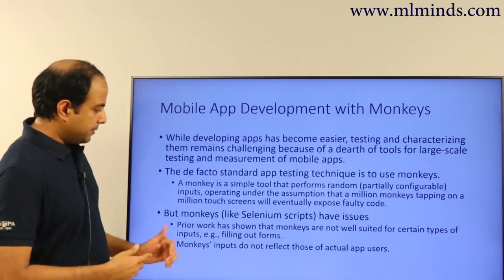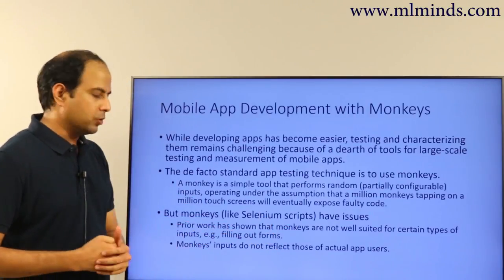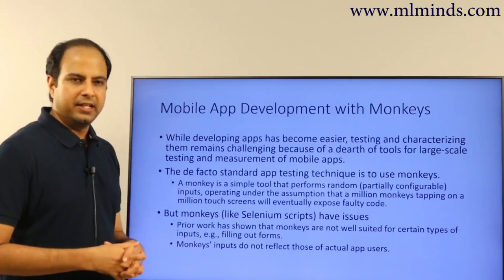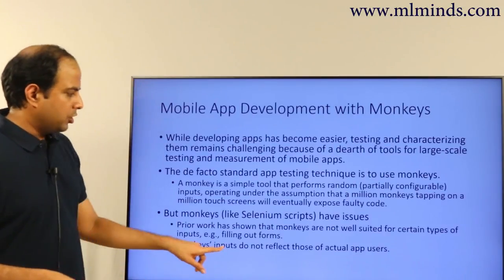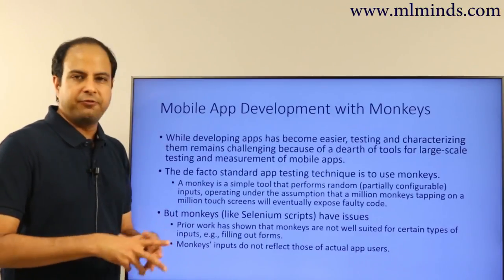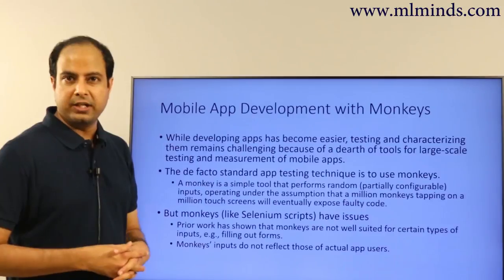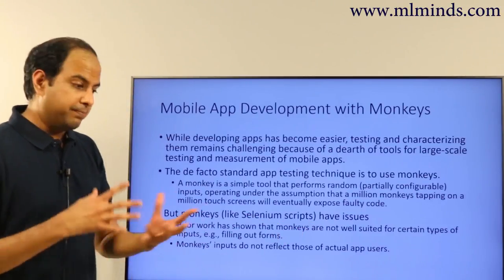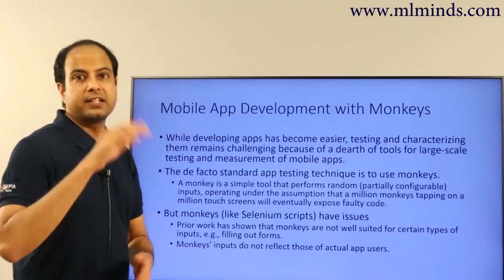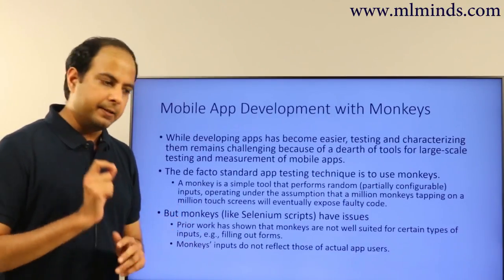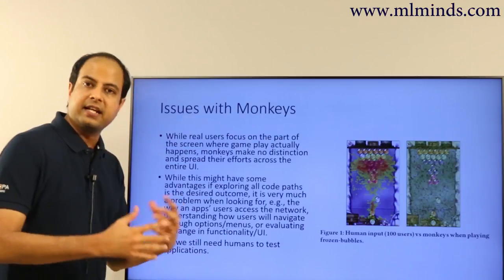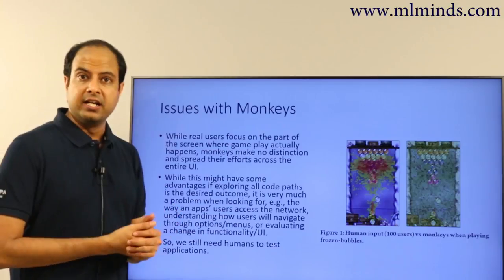Monkeys, like Selenium scripts, have issues. Prior work has shown that monkeys are not well-suited for certain types of inputs, for example filling out forms, which usually require logical input that normal users would fill in. Also, monkeys' inputs don't reflect those of actual app users. If you're trying to test performance, actual users may not touch a feature that takes a lot of RAM or CPU, but monkey scripts may show 10% failure due to resource usage. Actual damage may be very small but monkey scripts may make it feel large, or vice versa.